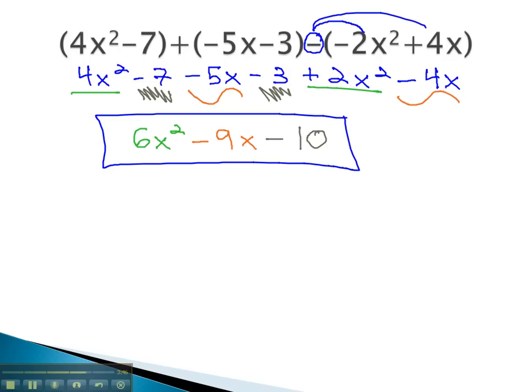If we are adding and subtracting with polynomials, we first need to distribute any negatives, and then simply combine like terms.